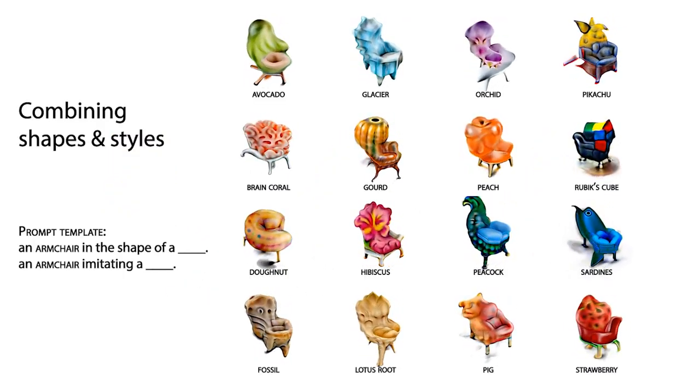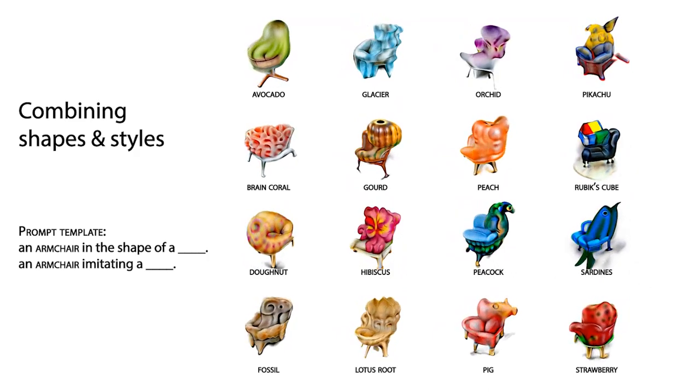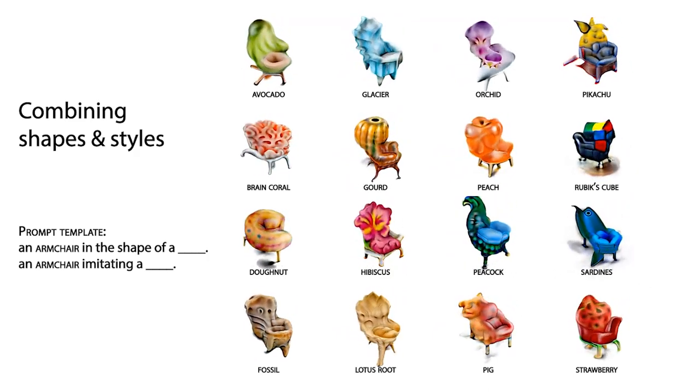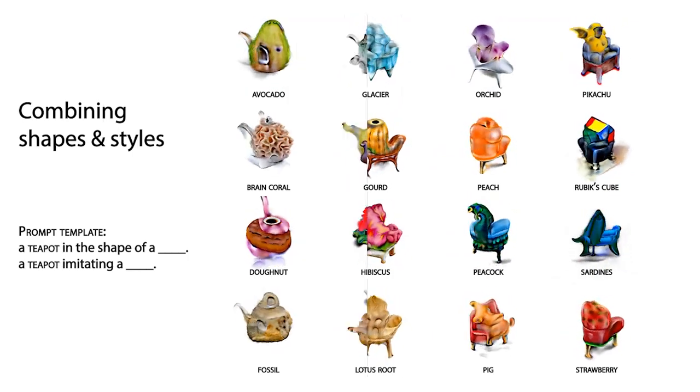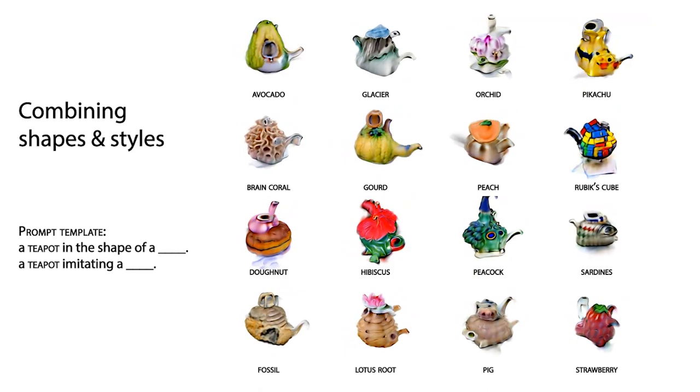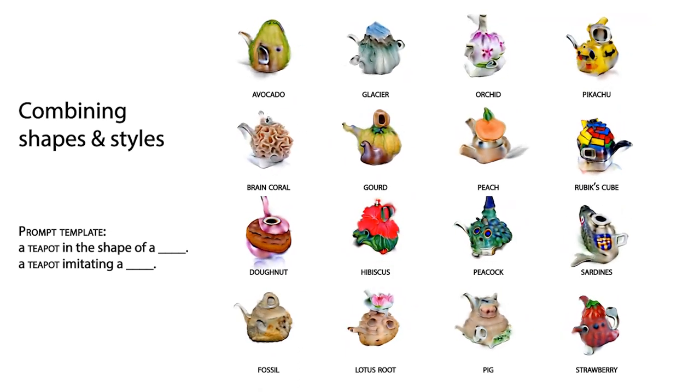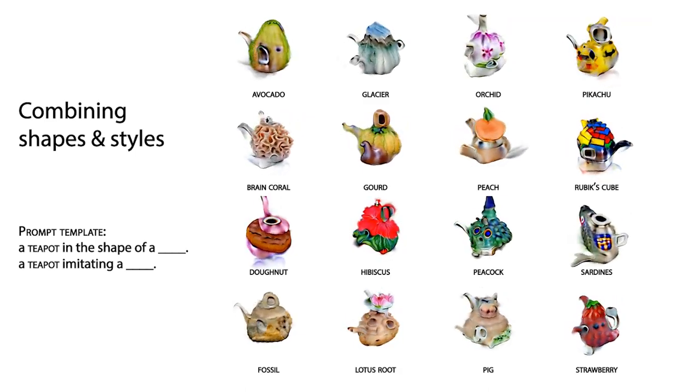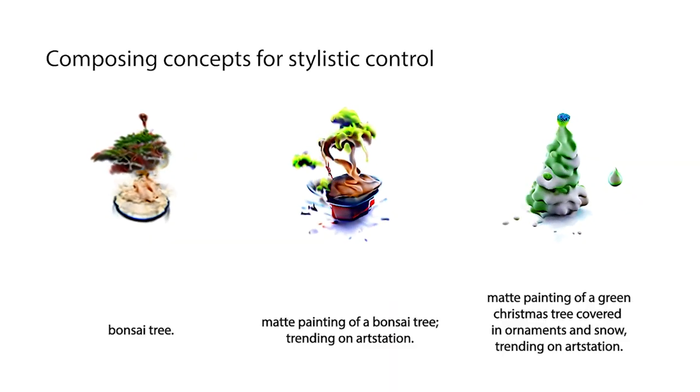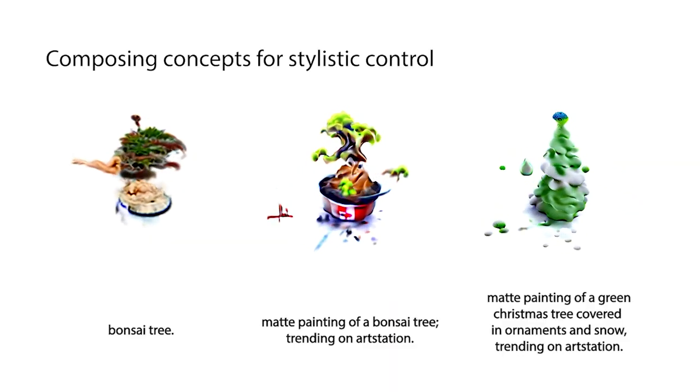Inspired by the DALI text-to-image generative model, we experiment with a compositional generalization of dream fields, showing that they can combine object categories like armchair and teapot with different types of styles and materials like brain corals, hibiscus, avocados, and lotus roots.